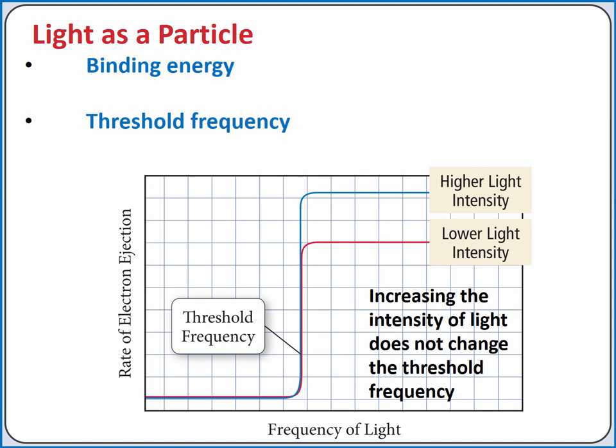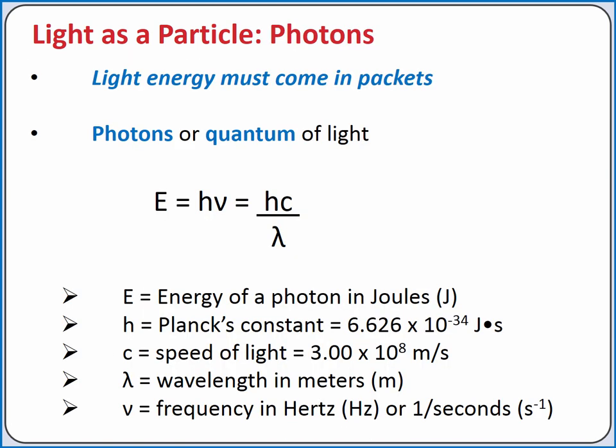The only thing to change is the rate at which electrons are ejected from the metal. This result only makes sense if light is acting not as a wave but as a particle. We call a particle or packet of light energy a photon or quantum of light.